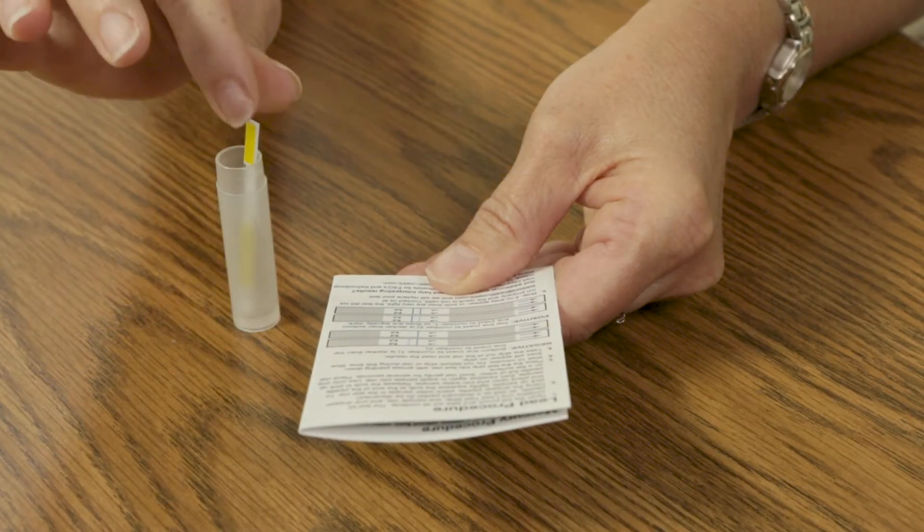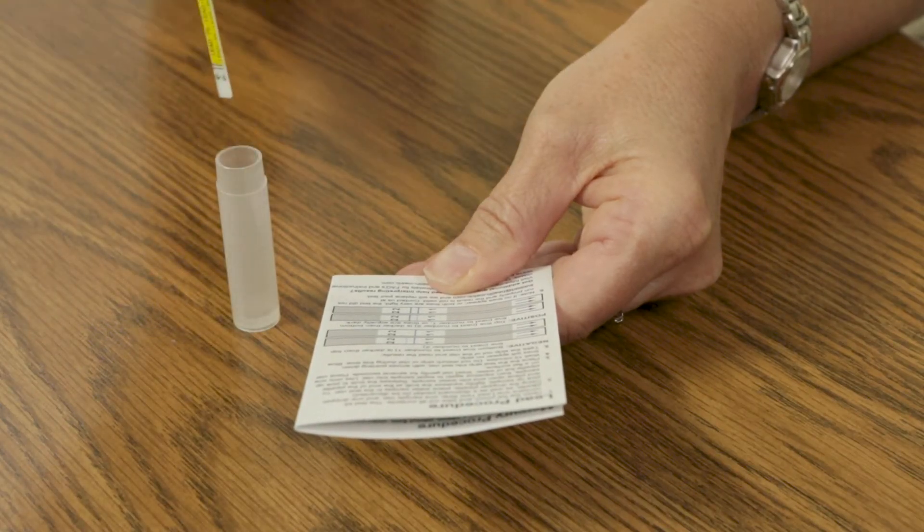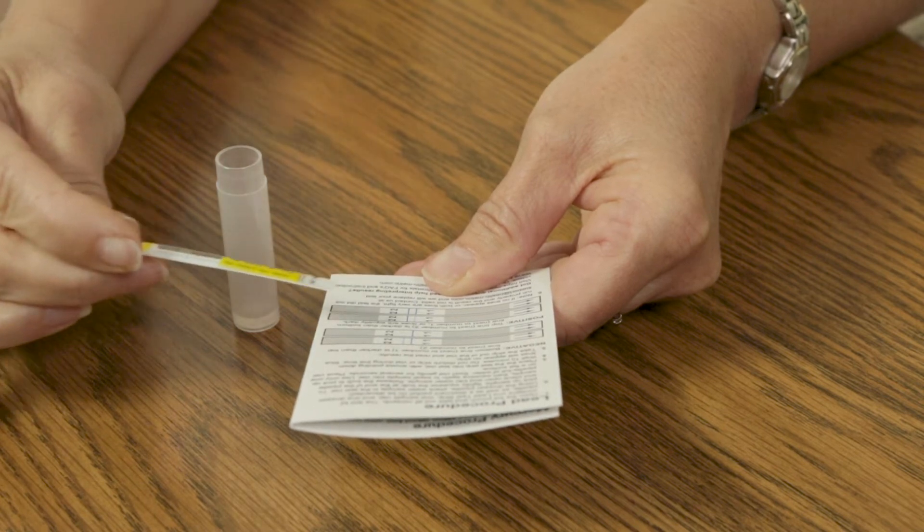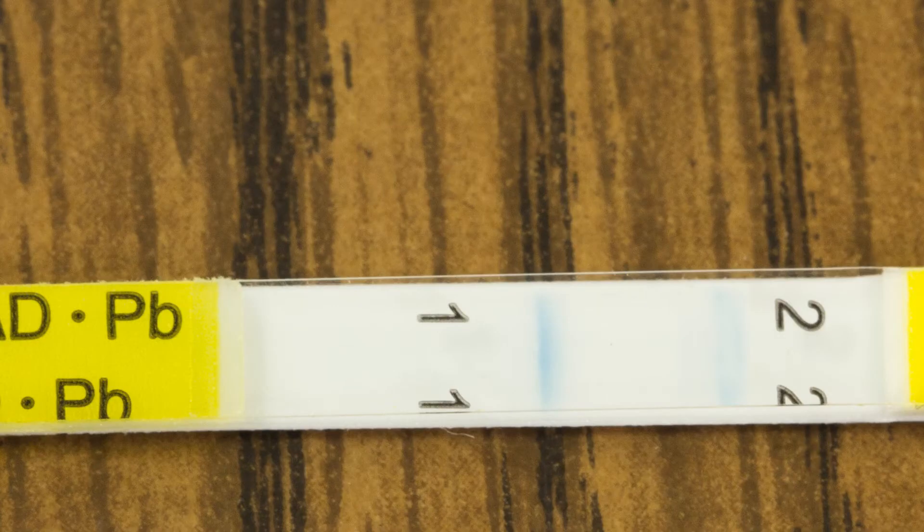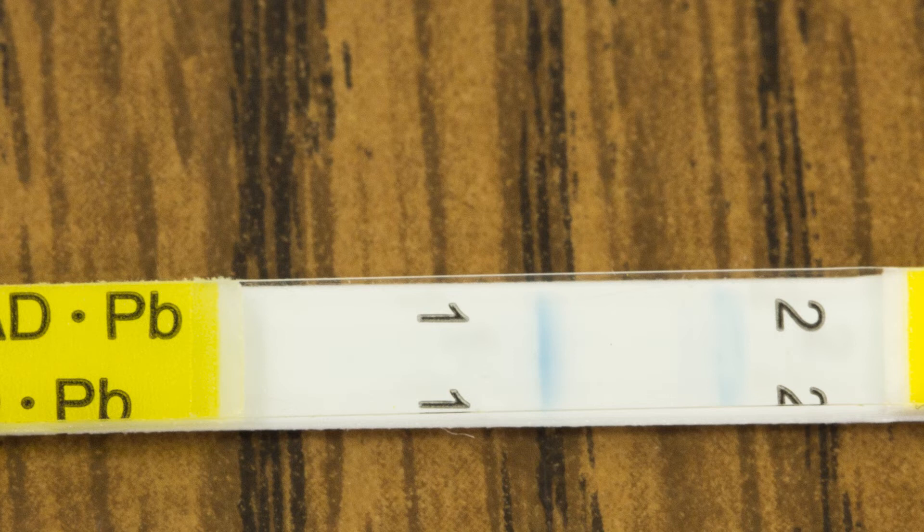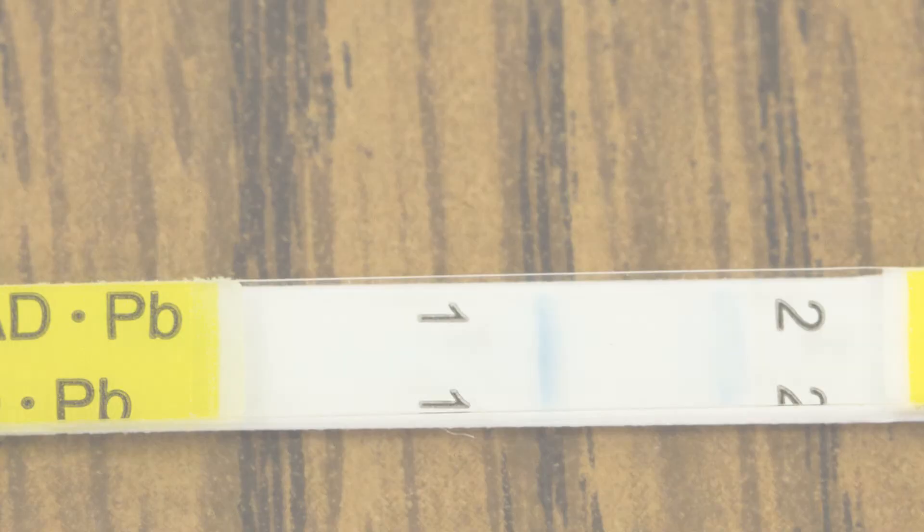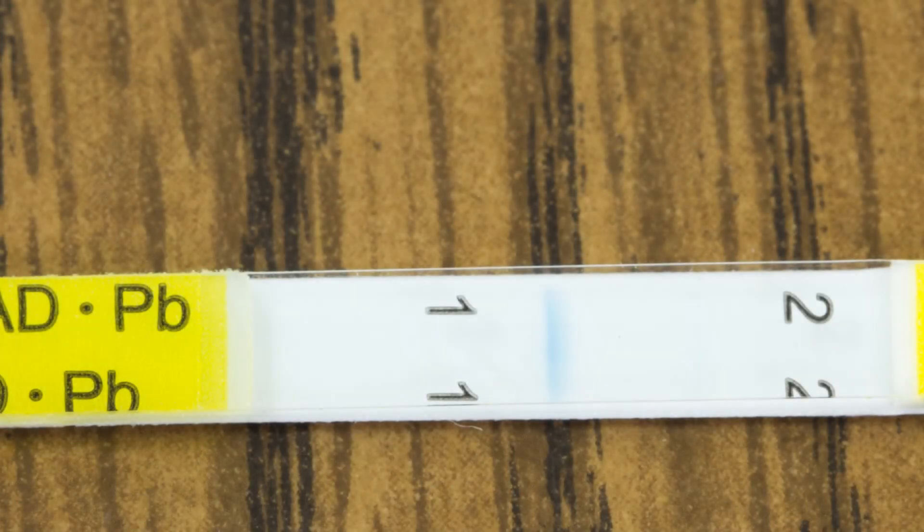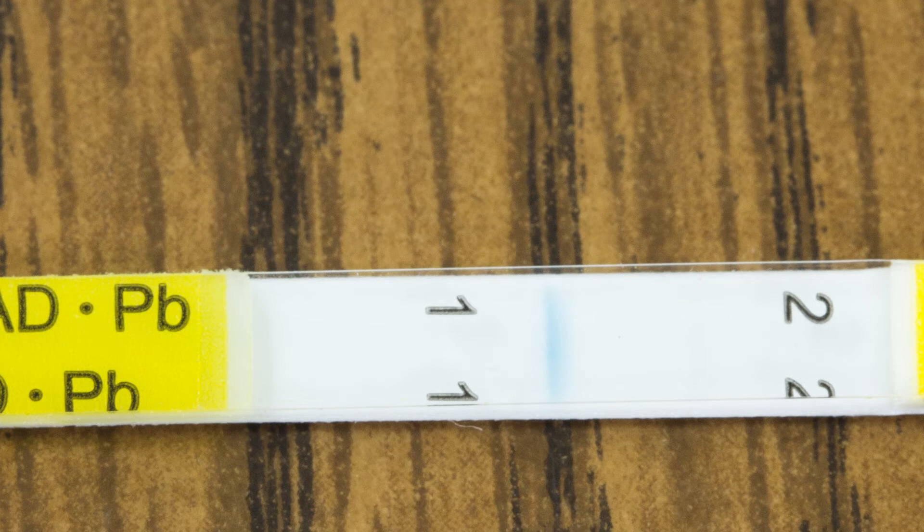After 10 minutes, take the strip out of the vial and read the results. For a negative result, look for a left line next to number one being darker than the right line next to number two on the strip. If you only see one line, the result is also negative. The lines may be lighter than shown on the diagram.